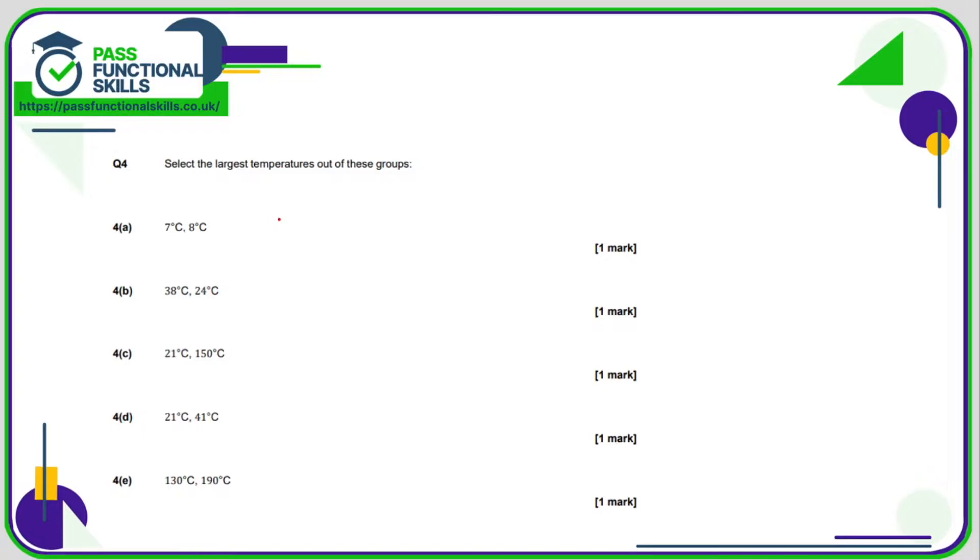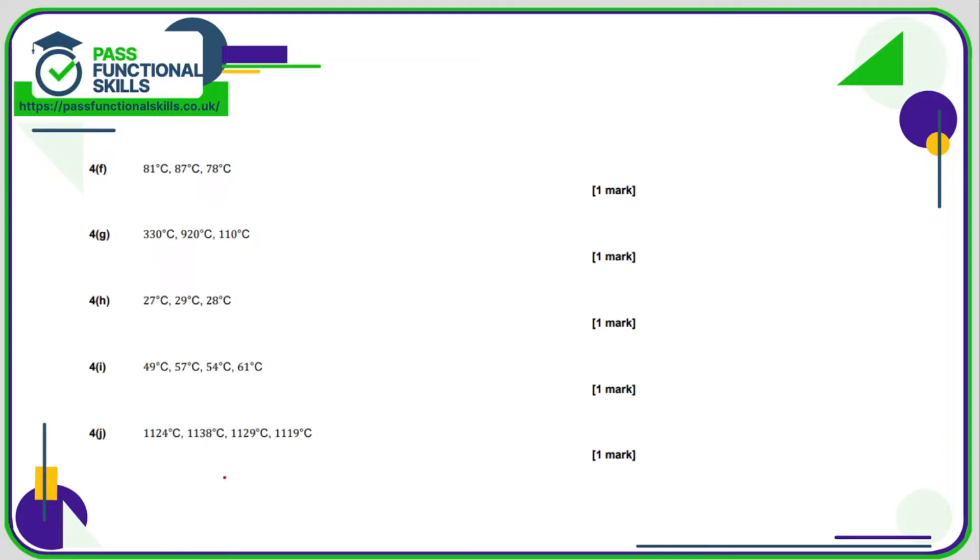Select the largest temperature. 7 versus 8: 8 is bigger than 7, easy enough. 38 is bigger than 24. 150 is bigger than 21. 41 bigger than 21. 190 bigger than 130. 87 is bigger than 81 and bigger than 80 and 78. 920 is bigger than 330 and 110. 29 is bigger than 28 and 27.